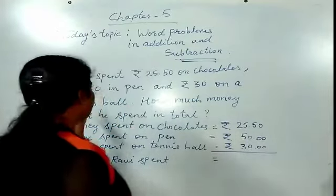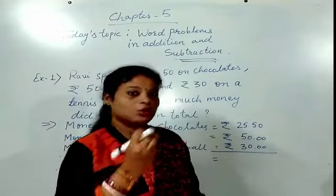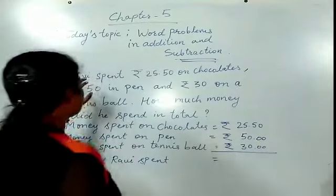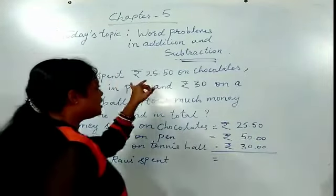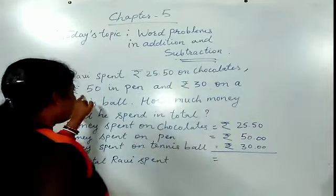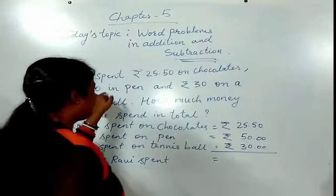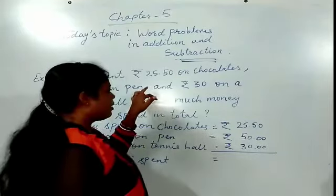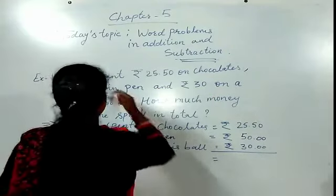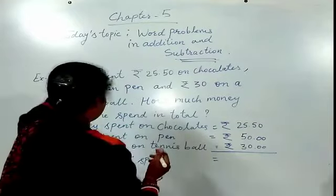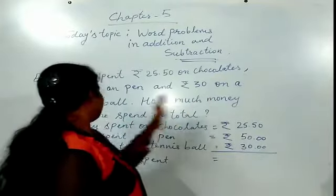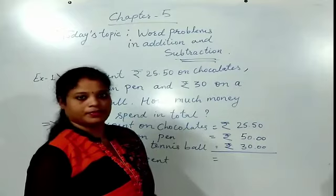Whenever you are getting any word problem, children, do one thing — first you read it again and again. So, Ravi spent rupees 25.50 on chocolates, rupees 50 on a pen, and rupees 30 on a tennis ball. How much money did he spend in total?